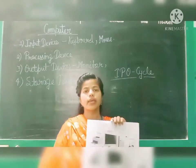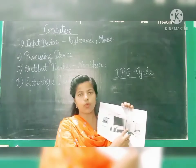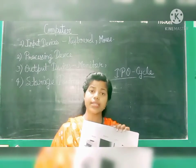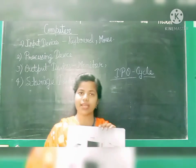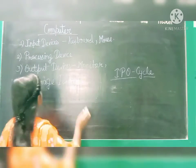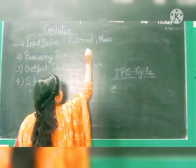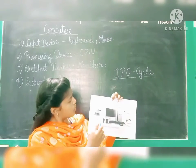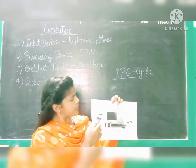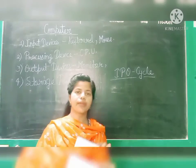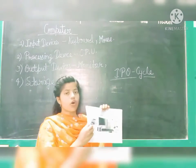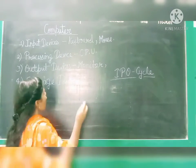The next device is CPU. What is the work of CPU? It works like our brain, so it is also called the brain of the computer. CPU is our processing device. Next, to the left of the monitor, you see the printer. Printer gives us printouts of our data, so it is also an output device.